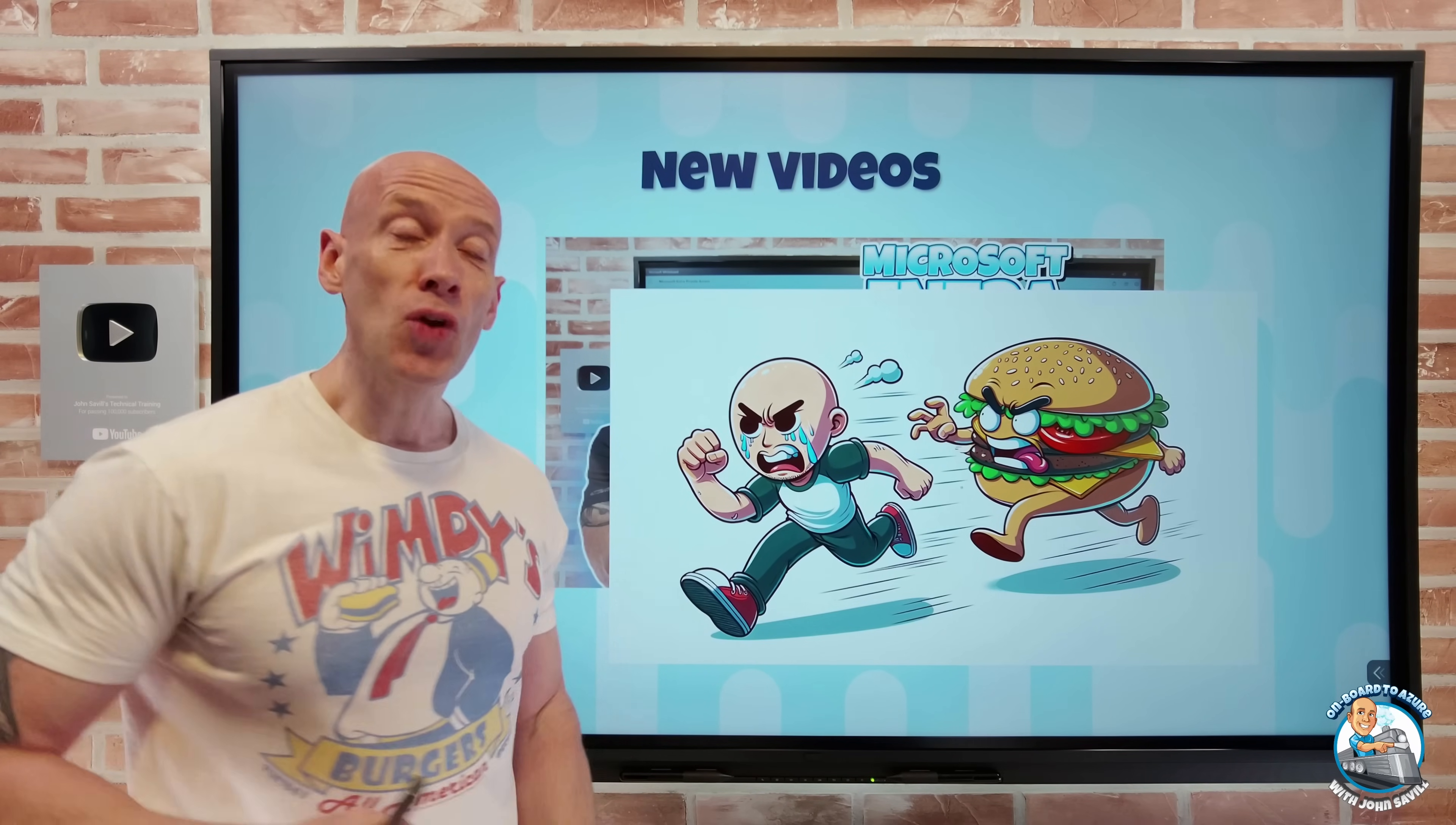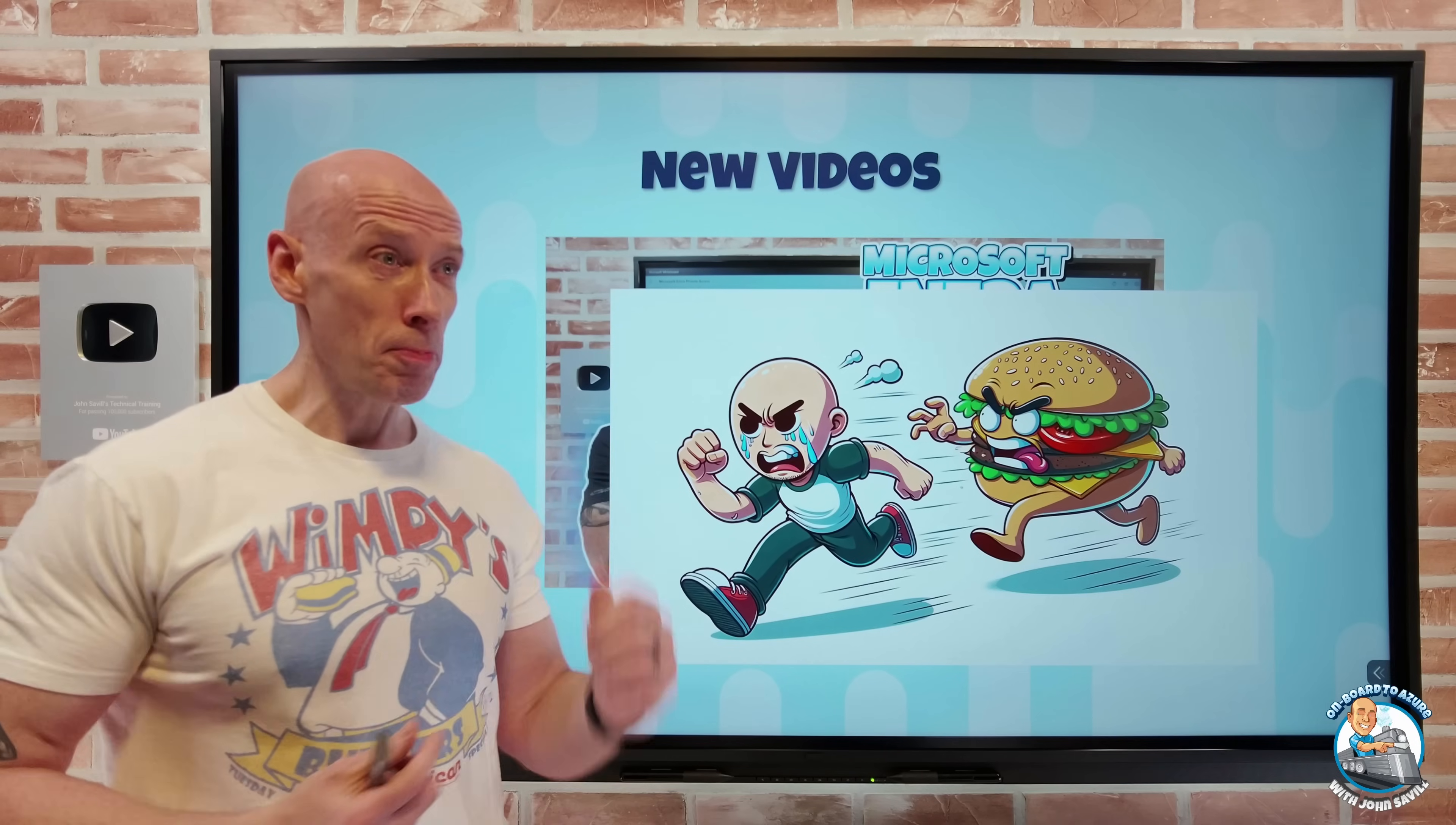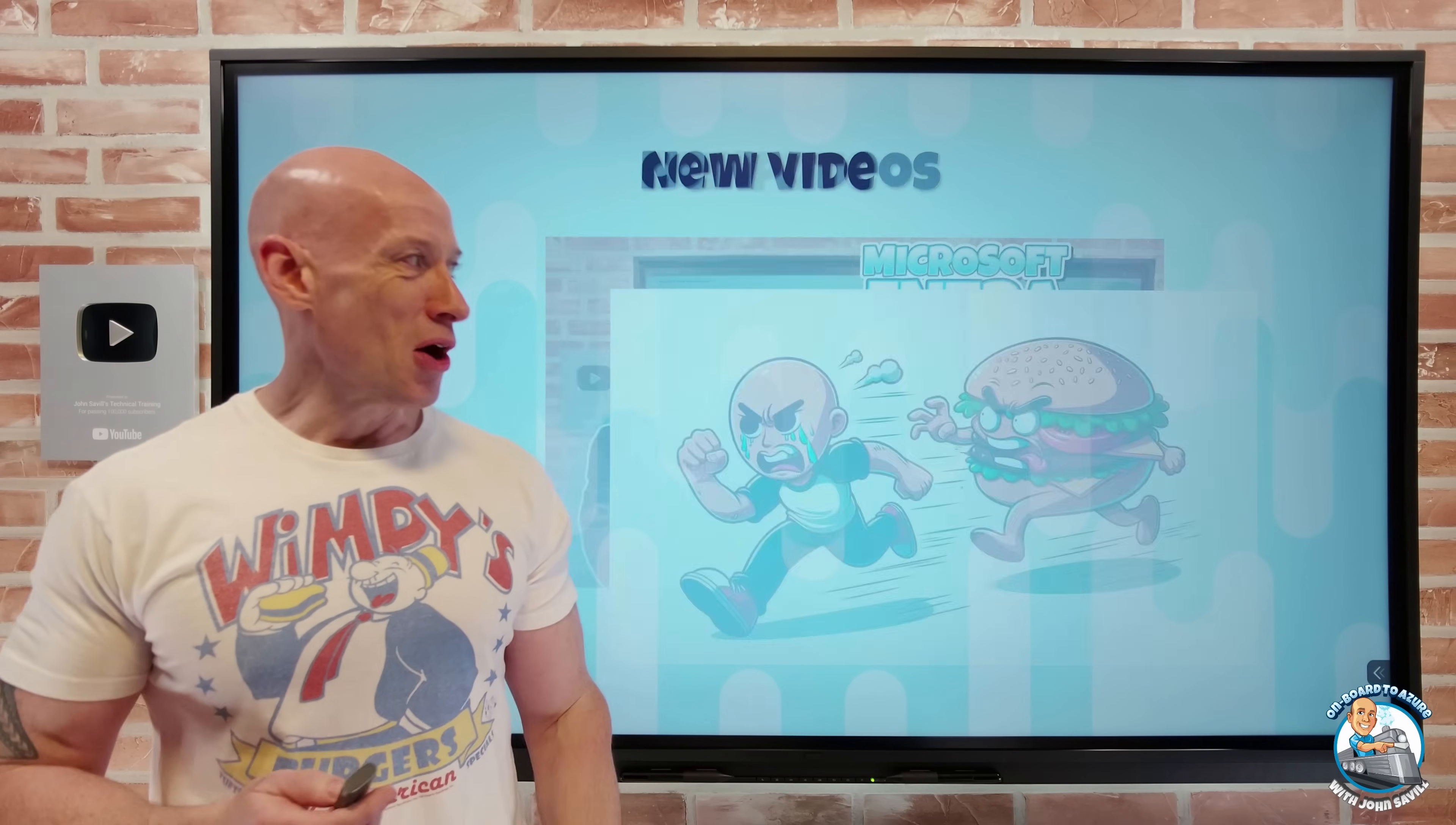But hey, more videos back to normal soon. And interestingly enough, when I did my AI 900 generative AI video last month, I used the example of a burger trying to eat John. So that was some kind of premonition that a burger was in fact going to try and kill me. Anyway, on with what's new.